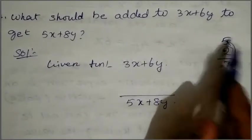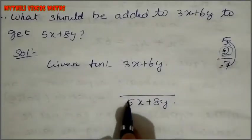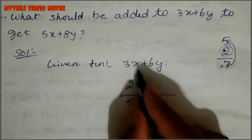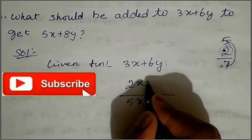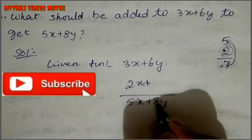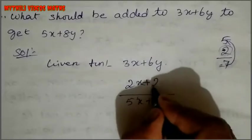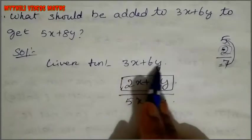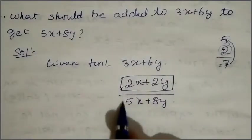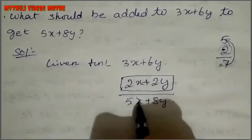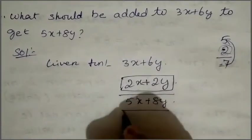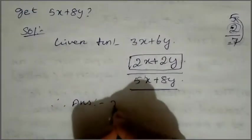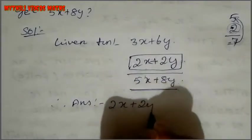5 minus 3 is 2 for the x term, and 8 minus 6 is 2 for the y term. So our answer is 2x plus 2y. Just check: 3 plus 2 equals 5, so 5x, and 6 plus 2 equals 8, so 8y. Therefore the answer is 2x plus 2y.